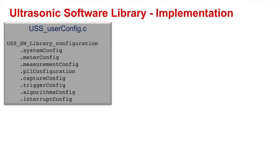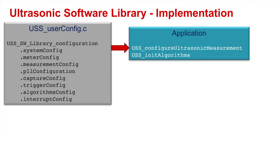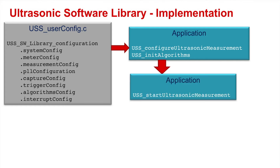A typical water meter application can be implemented with four simple API calls. First, the developer uses a structure to define and initialize the ultrasonic subsystem and its algorithms. After initialization, the application calls an API to perform each measurement, getting the ultrasonic ADC-sampled waveforms as a result.